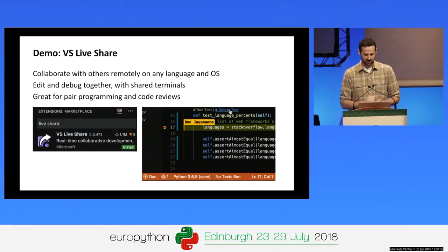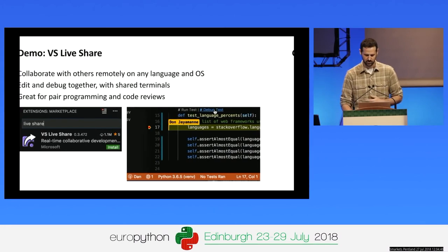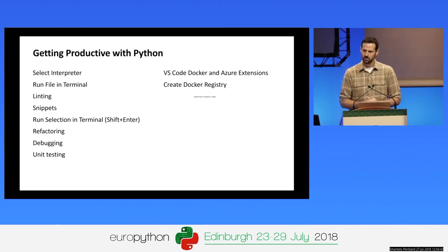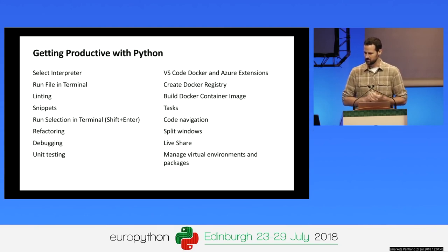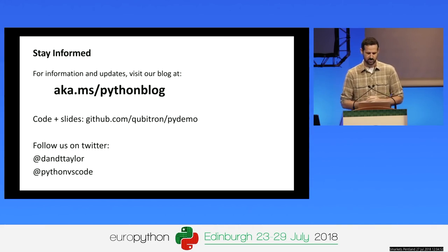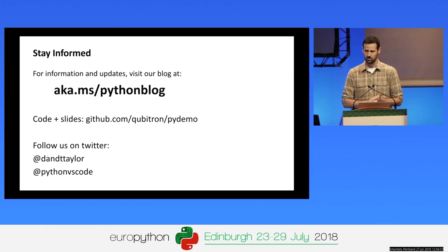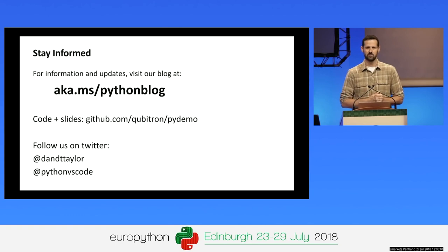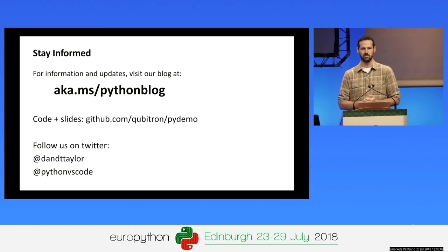That was VS Live Share — get the extension and start doing pair programming and code reviews with your co-workers. To get productive with VS Code today, go to code.visualstudio.com. For more information about the VS Code Python extension, Python and Visual Studio, or Python and Azure, check out our Python blog. Code and slides are available at the repo shown on screen. Follow us on Twitter — thank you so much for having me here, this is a wonderful conference!